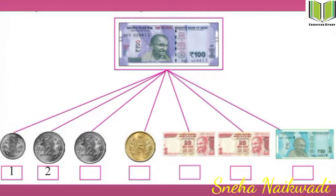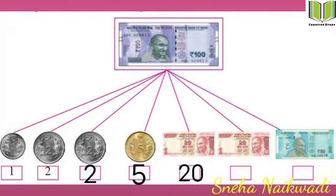Rama's uncle gave her a 100 rupee note, and Rama wanted change from Nandukaka's shop. Nandukaka gave her the following: 1 rupee, 2 rupees, 2 rupees, 5 rupees, then 20 rupees, 20 rupees again, 20 rupees, and 50 rupees.